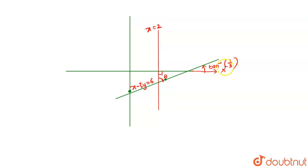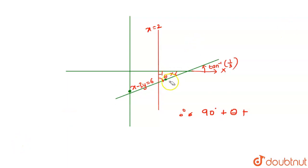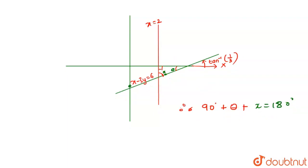We use the concept of a triangle: the sum of all interior angles equals 180°. The triangle has angles 90°, θ, and x (the angle we want to find). Since the angle at the intersection corresponds to vertically opposite angles, θ also equals tan⁻¹(1/3). Using the triangle property: 90° + θ + x = 180°.